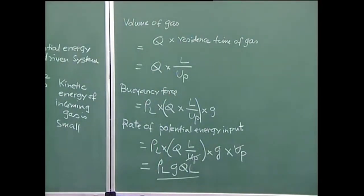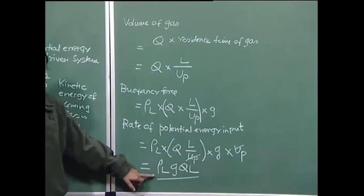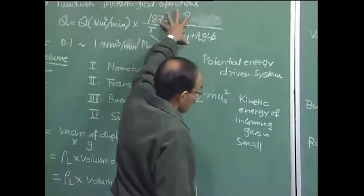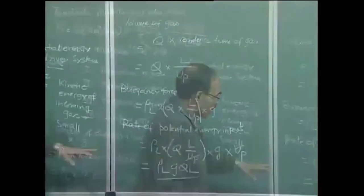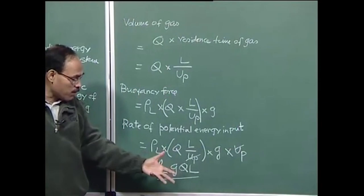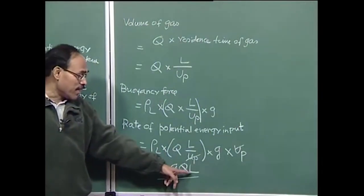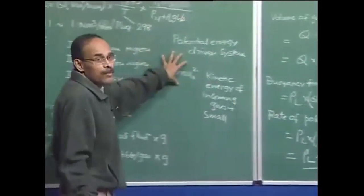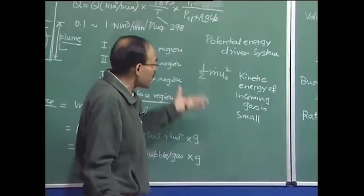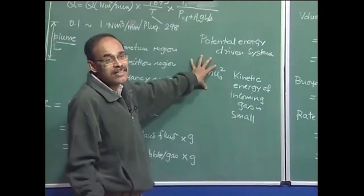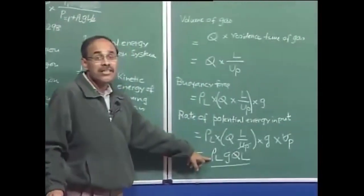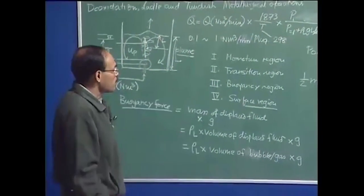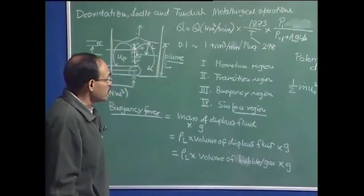In an industrial system, ρ_liquid = 7000 kg/m³, g = 9.81 m/s². The correction factor from normal to actual conditions comes out to be about 5 to 6 times. The depth of liquid in an industrial system is about 3 meters. Substituting these values, we can immediately show that the kinetic energy applied by the injected gas is barely 1 percent of the potential energy afforded by the rising bubbles. This simple expression confirms it is indeed a potential energy driven system.